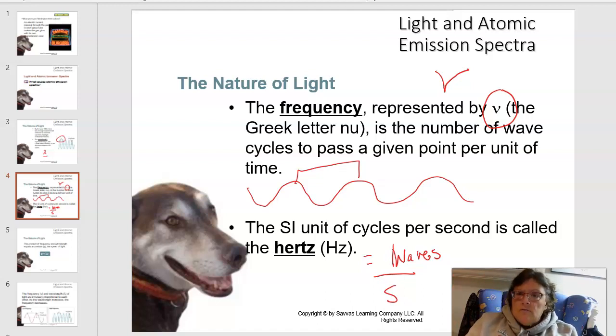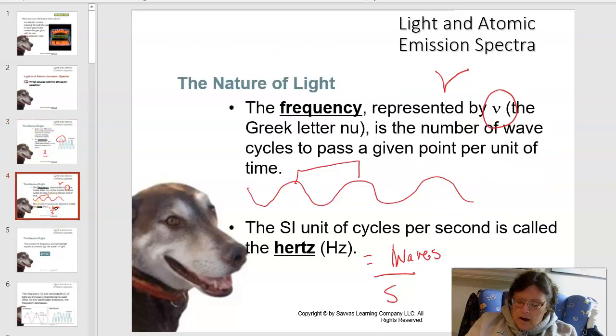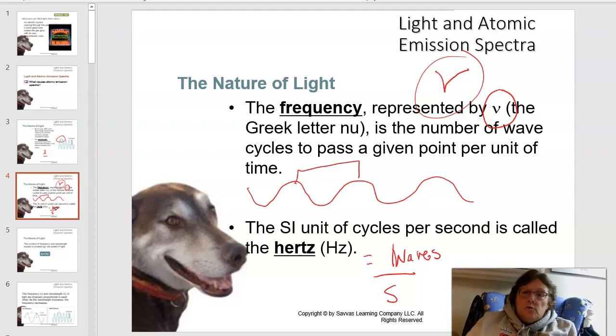So light travels in waves. We can talk about wavelength, which is the distance between crests. We can talk about wave frequency, which is the number of times the wave passes in a given amount of time. We can also talk about amplitude, which is the height of the waves, but we don't need to worry about that right now.